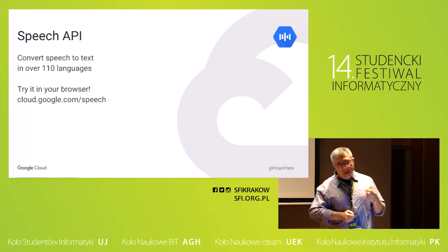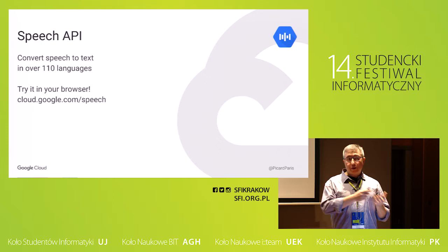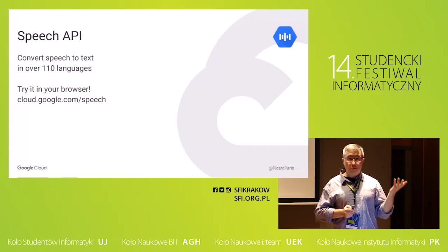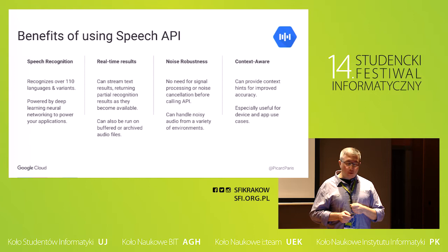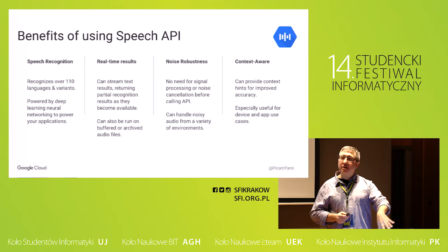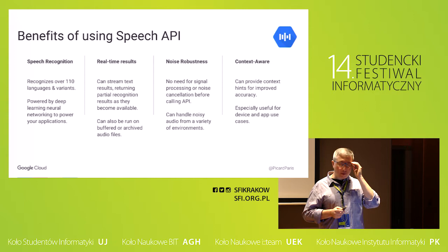The third API is the Speech API. This time we're not providing text as input — we're providing audio speech. Like the Translation API, it supports over 100 languages and it converts speech to text. You can index audio because you can transcribe everything to text. One cool thing is that it's real time — you can work in batch but also in real time, almost immediately. It's also robust to noise; thanks to machine learning, the noise is just ignored.